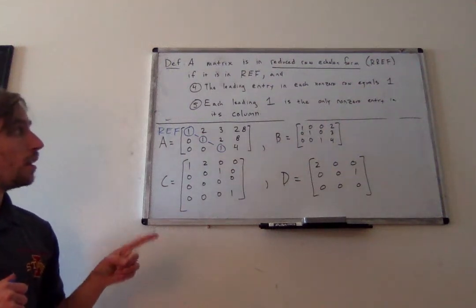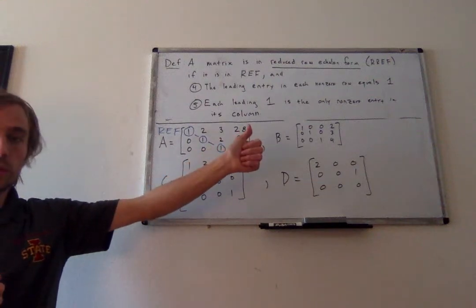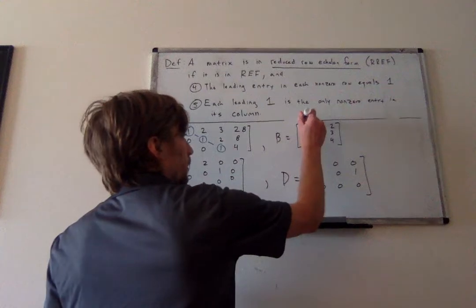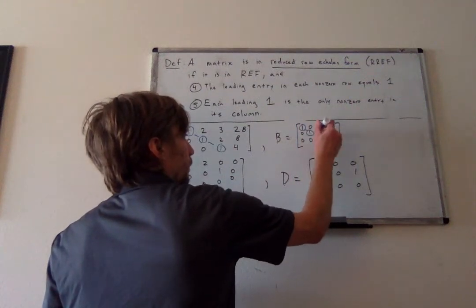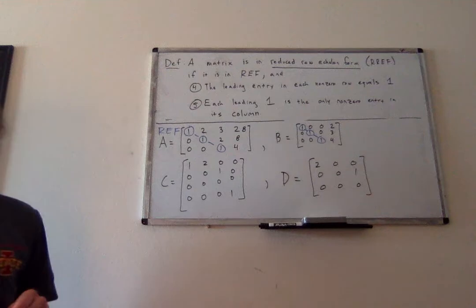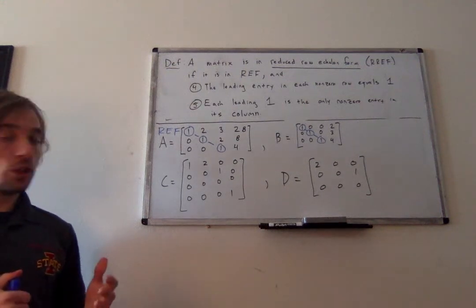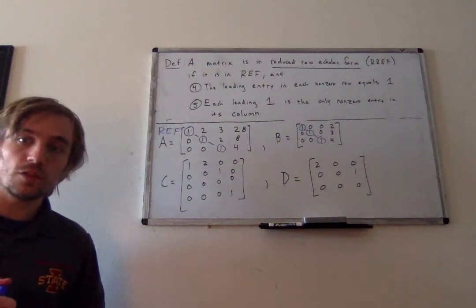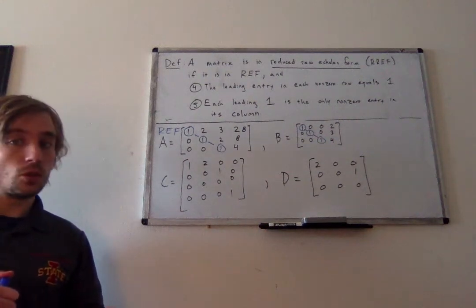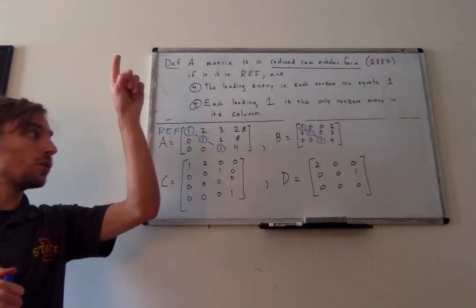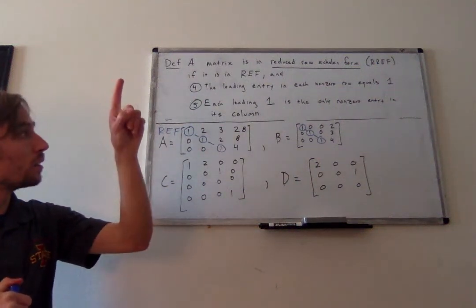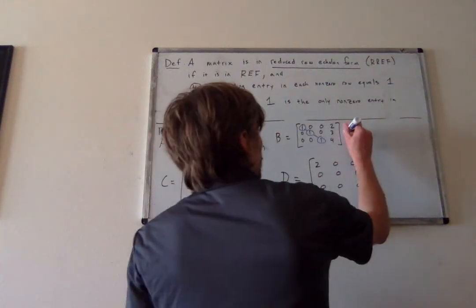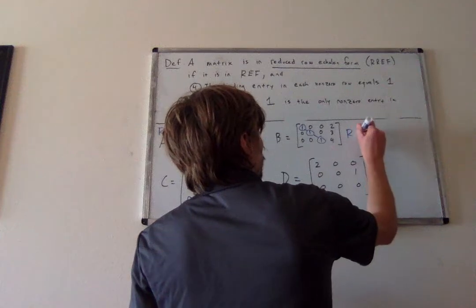Matrix B: no zero rows, so property one is good. Circling all the leading entries, they are always moving right — property two satisfied. Tackling properties three and five together: each leading entry looks down and sees only zeros, and each leading entry looks up and sees only zeros as well. All leading entries are equal to 1. So B is actually in reduced row echelon form.